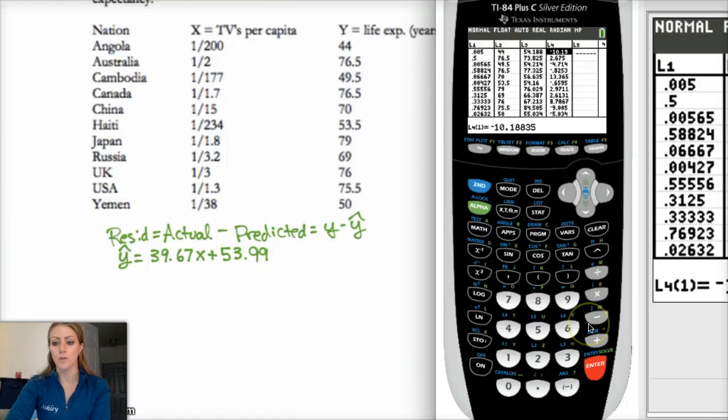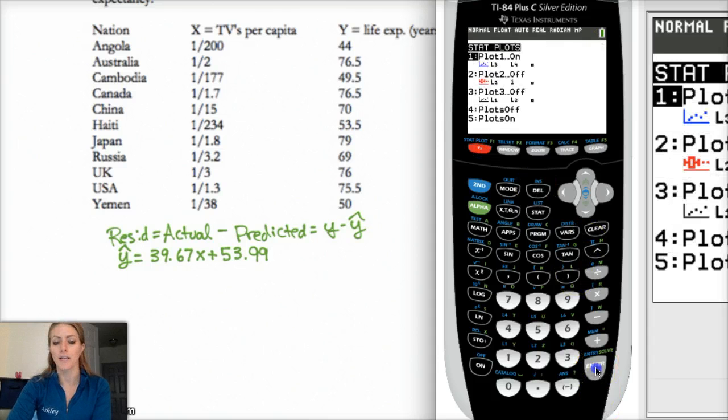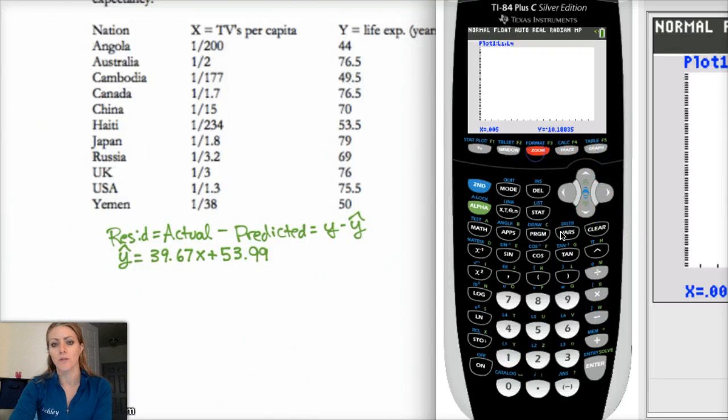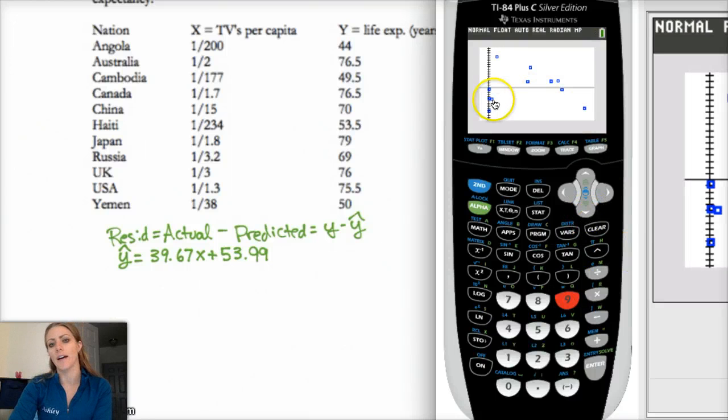And so in order to graph the residual plot, I'm just going to go to second stat plot, and then graph it the same way you would any other scatter plot. Select your scatter plot. I want to do, my X list is still my X list, so L1. But my Y list is L4, because that's the residuals. And zoom nine.